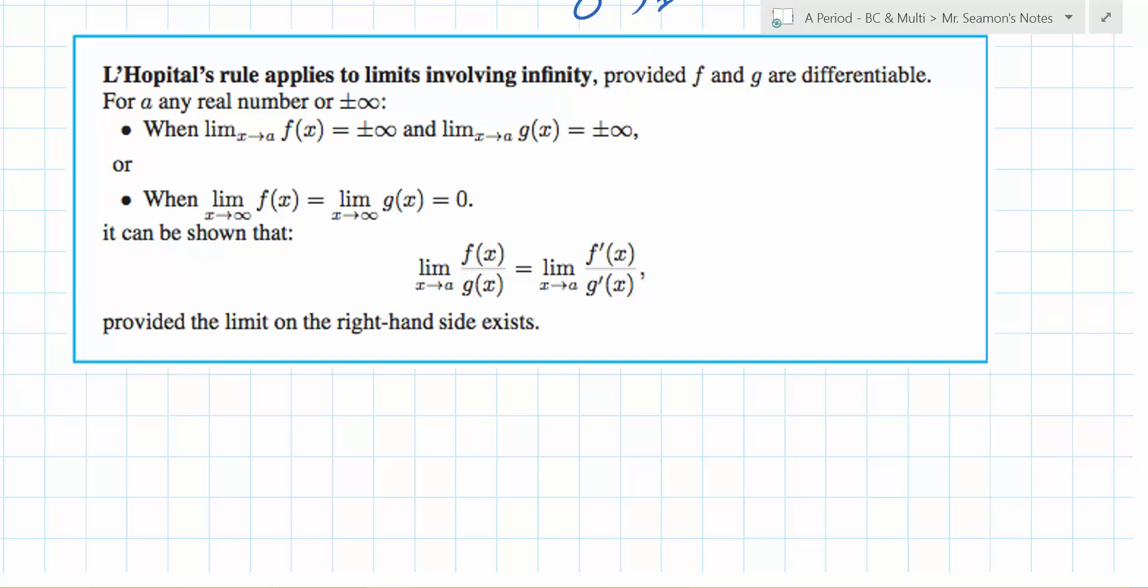It gets worse. So usually the case is, you might think to yourself, Sujohn, you might think to yourself, hey, I'm doing L'Hopital's rule. I take the derivative. It got uglier. Oh, I must be doing something wrong. There are cases where you do the derivative, it gets worse, but it becomes something that you can evaluate. So that's the first way it can get more difficult.